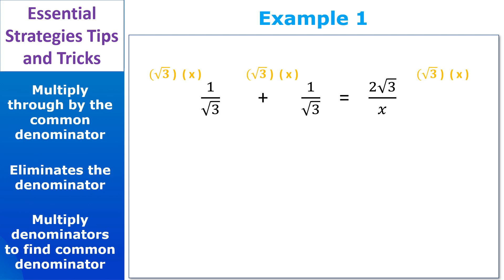Then we just cross stuff off that's the same on the top and the bottom. So on the first term, the root 3s cross off. On the second term, the root 3s cross off. And on the other side of the equation, the xs cross off. And just like that, we have a very simple equation and not a denominator in sight.